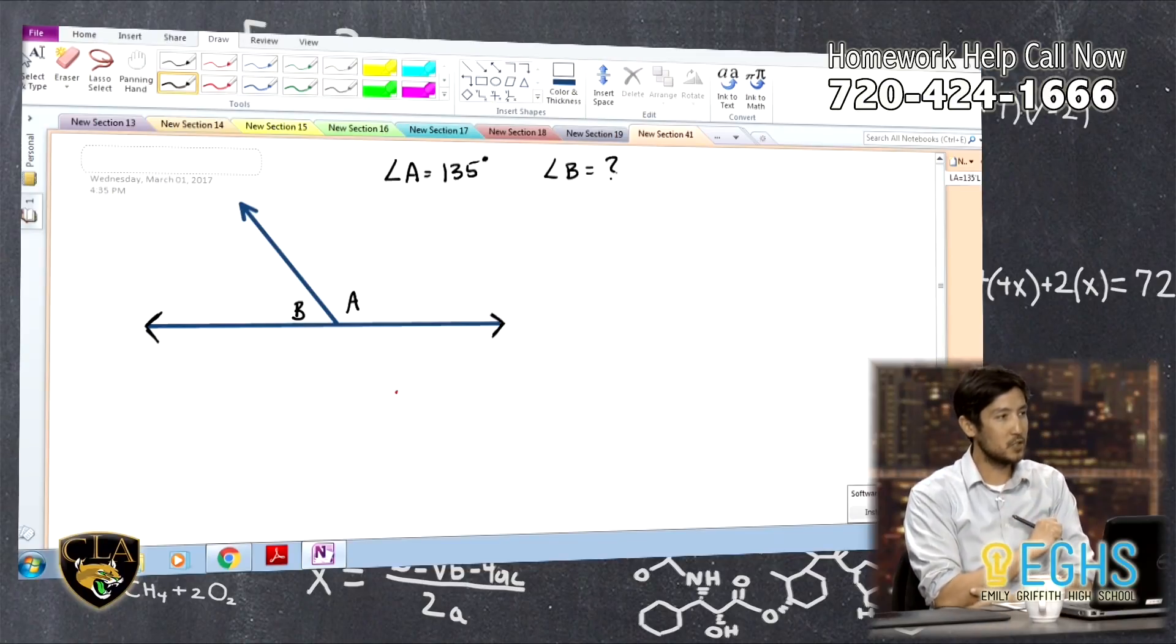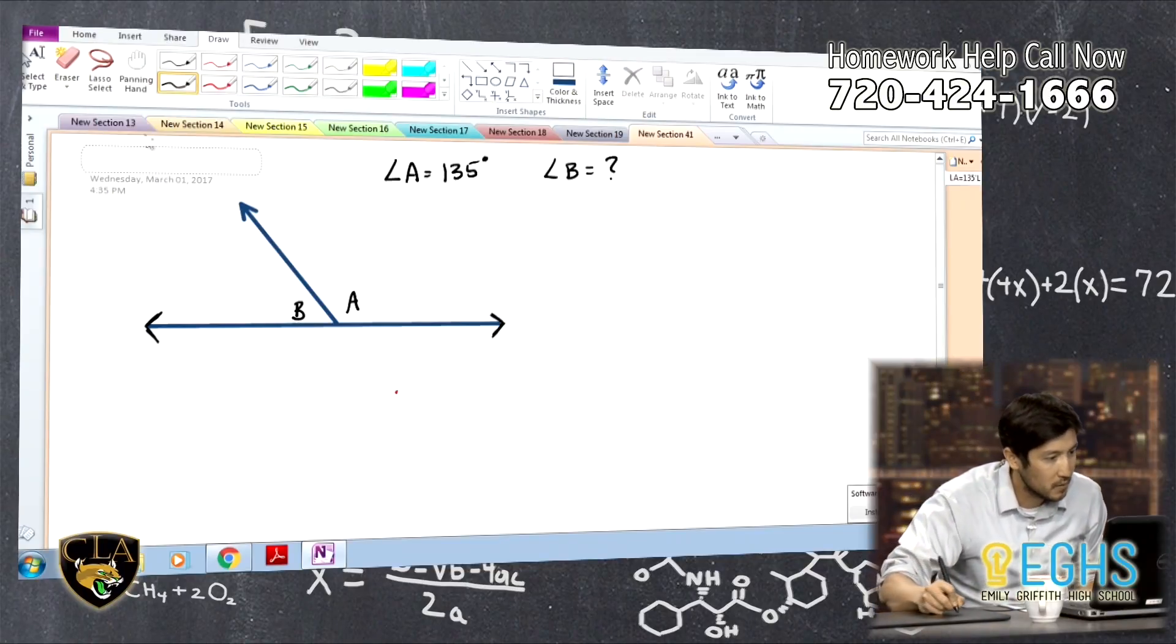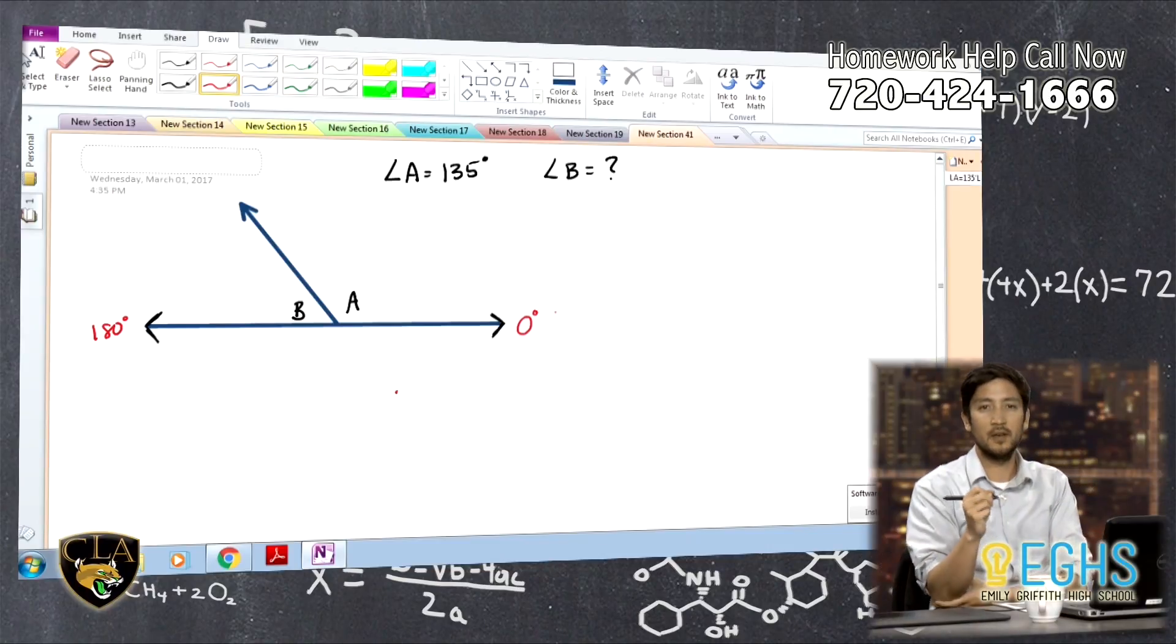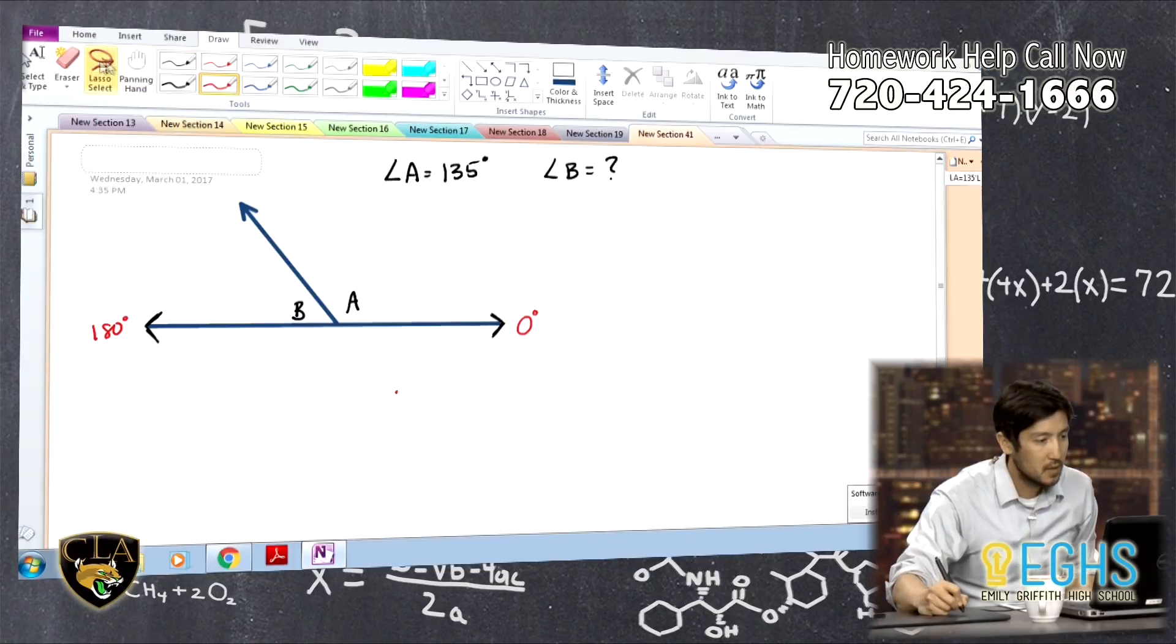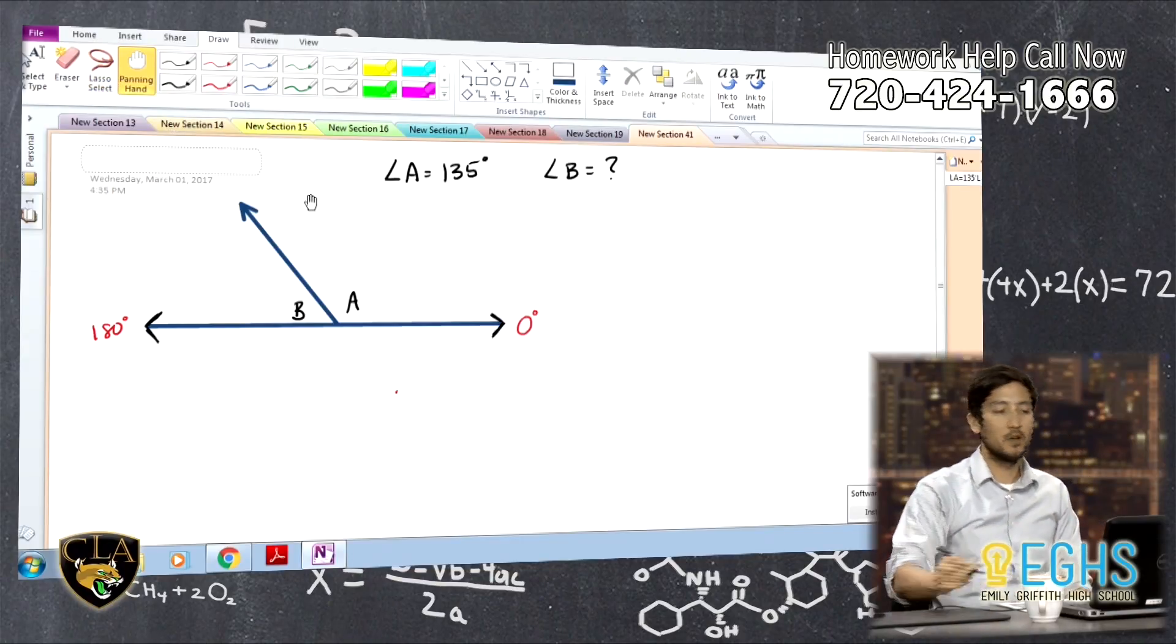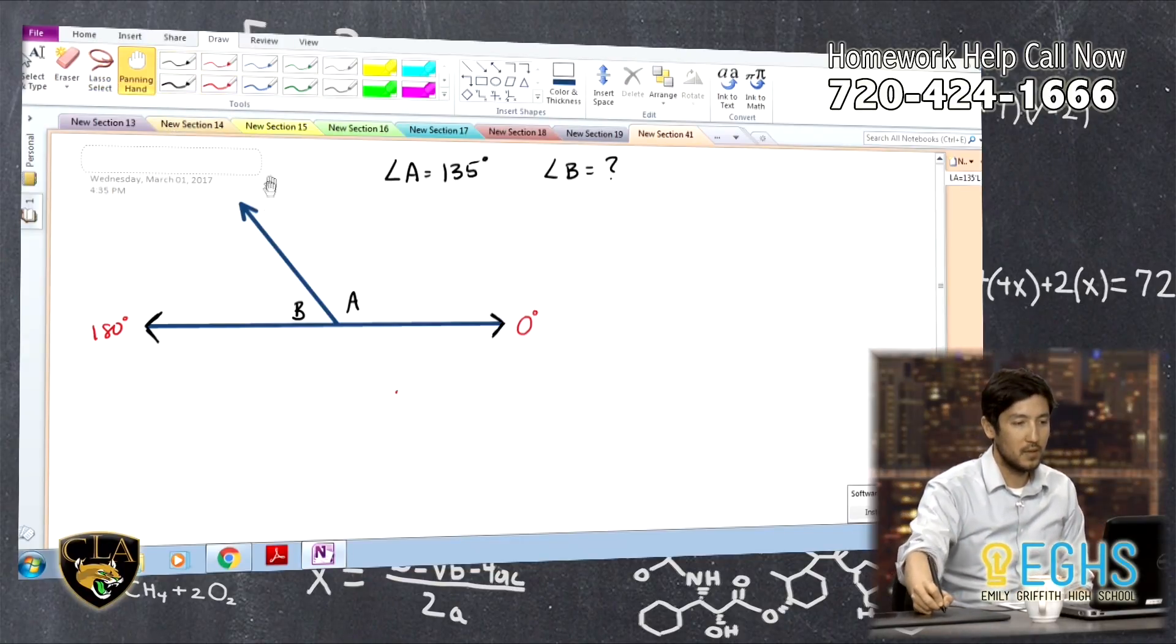So the first thing that you should notice, and they actually give this to you on this figure, so it's kind of helpful, is that it says 180 degrees and 0 degrees. This isn't typically given. You should know, if I were to pull out, let me see if I can pull this away. No, I don't think it is.